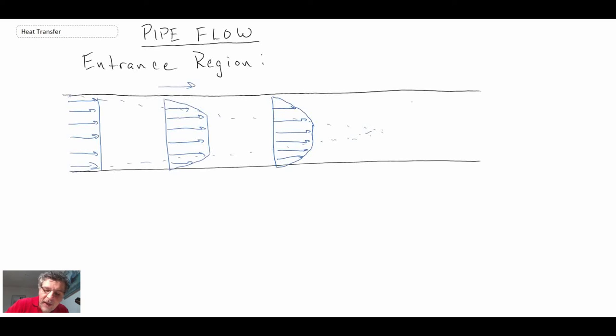What eventually will happen is our boundary layer will grow and grow and grow, and eventually we'll get to some point within the flow field where the boundary layers have merged from around the perimeter of the wall. So here we're looking at, for example, a round pipe.